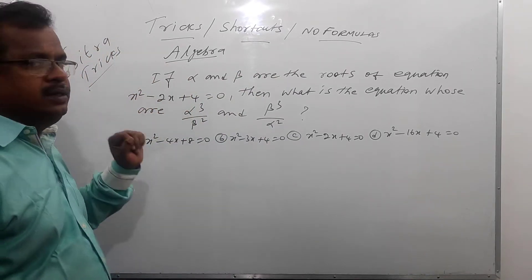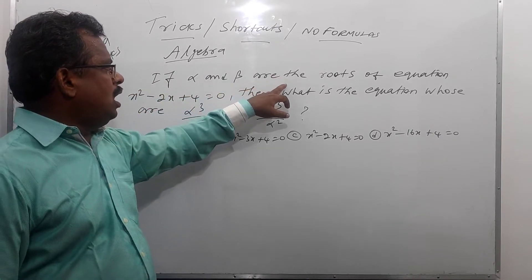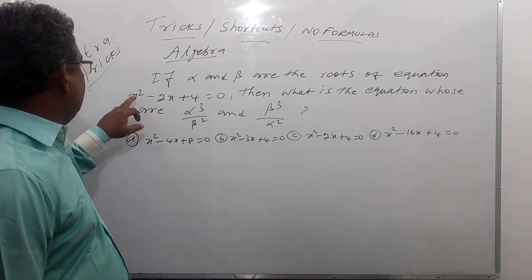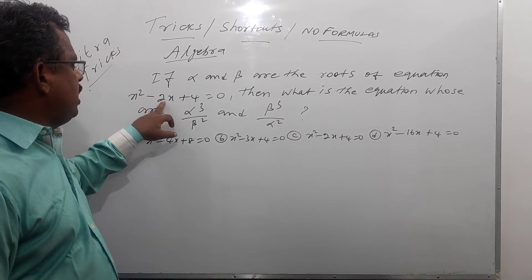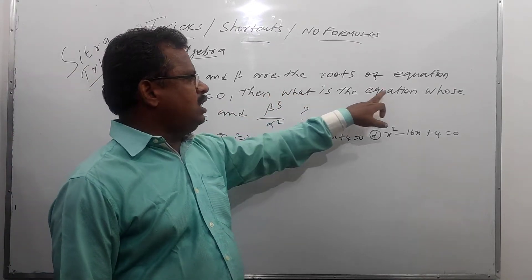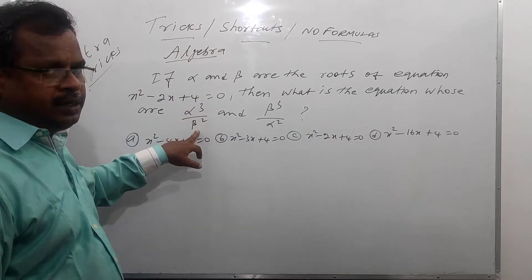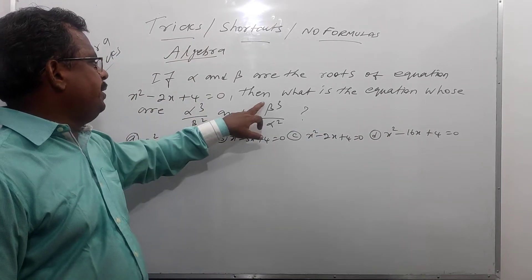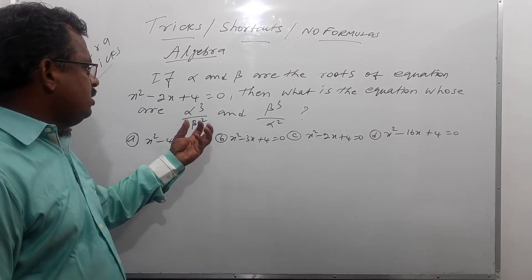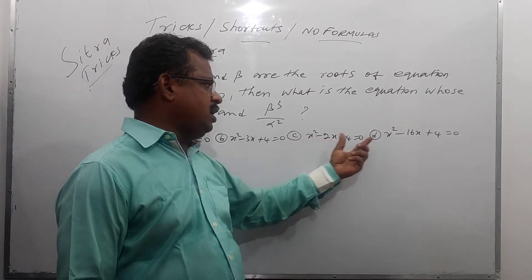The sum is: if alpha and beta are the roots of equation x squared minus 2x plus 4 equal to 0, then what is the equation whose roots are alpha cube by beta squared and beta cube by alpha squared? Options A, B, C, D are also given.